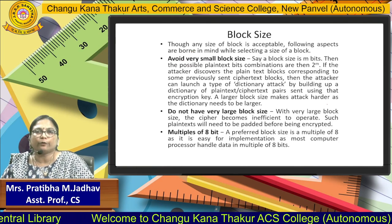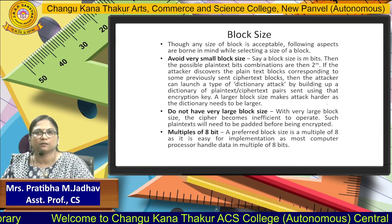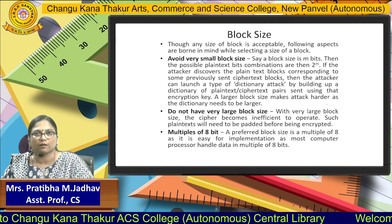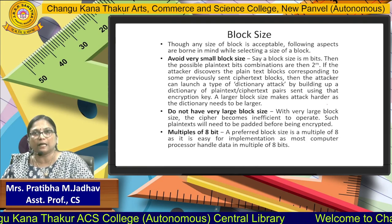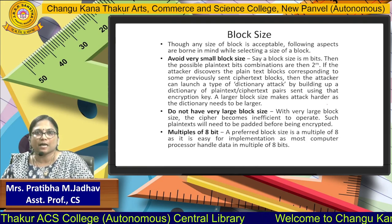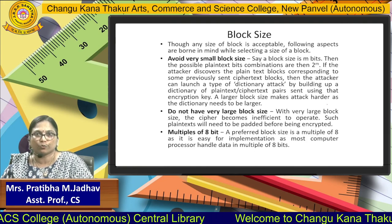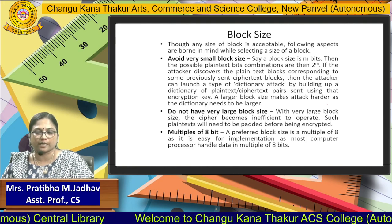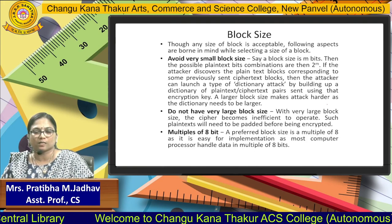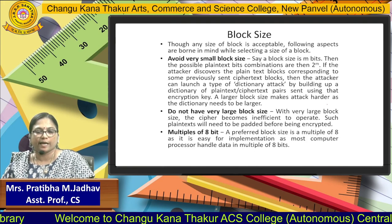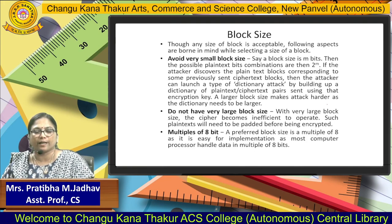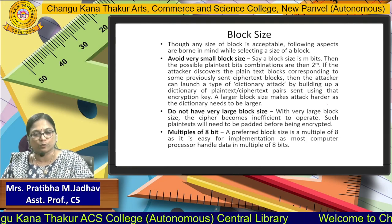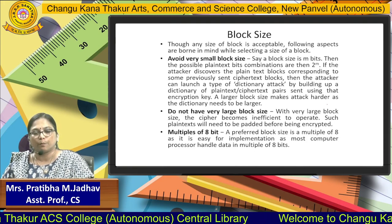When you are going to use any cipher techniques, there will be a limited number of blocks to cipher or to encrypt the data. The block size has several rules. The first rule is to avoid very small block size. If block size is of M bits, then possible plaintext bit combinations should be 2 raised to M — it should not be less than 2 raised to M. So, avoid very small block size.